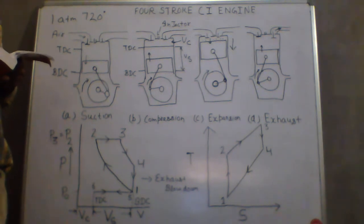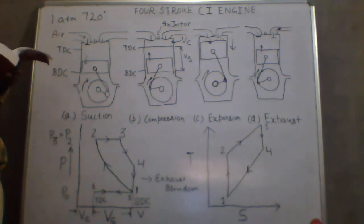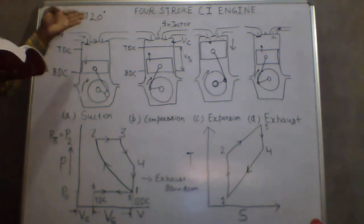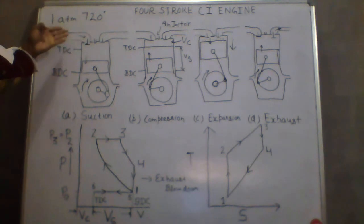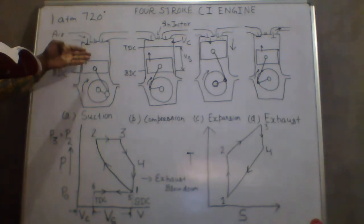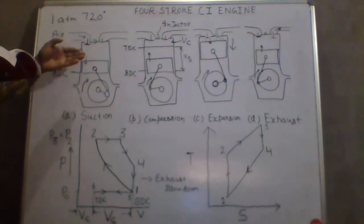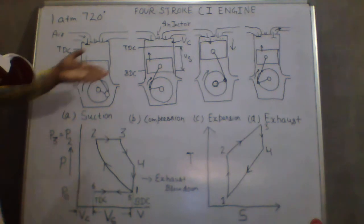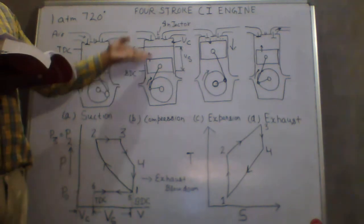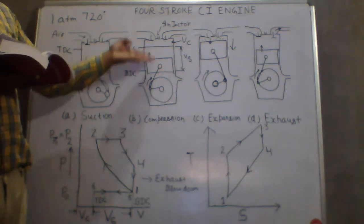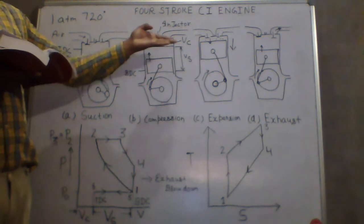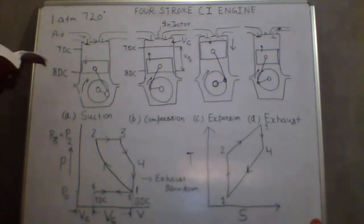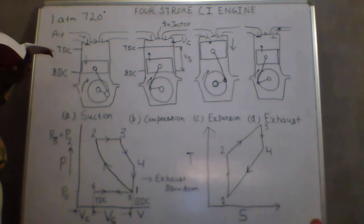In the CI engine, during the suction stroke, air alone is induced instead of a fuel-air mixture. Due to the higher pressure ratio employed, the temperature at the end of the compression stroke is sufficiently high to self-ignite the fuel. Because the compression ratio is very high, the fuel will automatically burn without any spark.